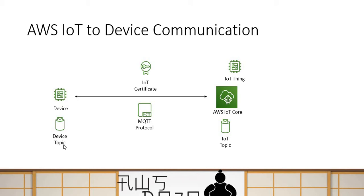Once device registration is done and IoT certificates are generated and copied back to your device, you use the publish-subscribe model to make MQTT protocol-based communication. If the device has to talk to AWS IoT Core, you create a topic which IoT Core subscribes to, and the device sends an MQTT message to that topic. If IoT Core has to talk to the device, the device subscribes to a topic and IoT Core sends the message through that topic.